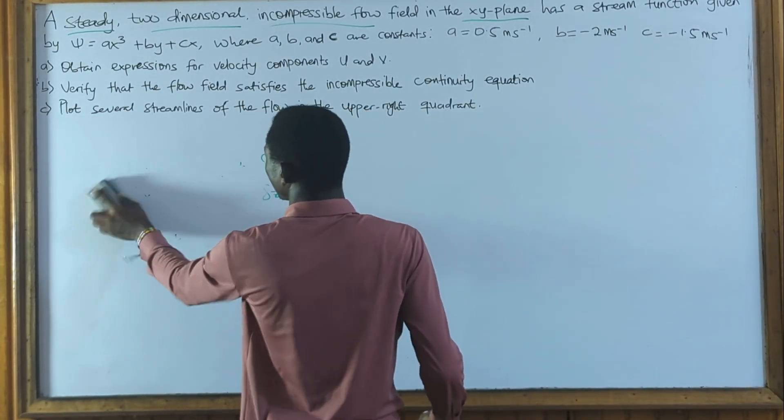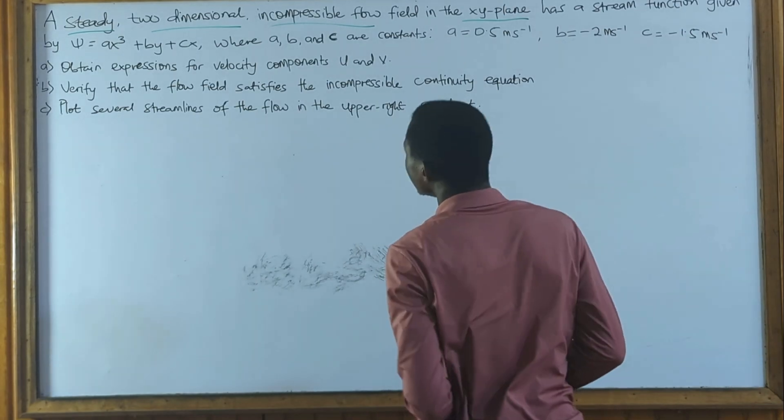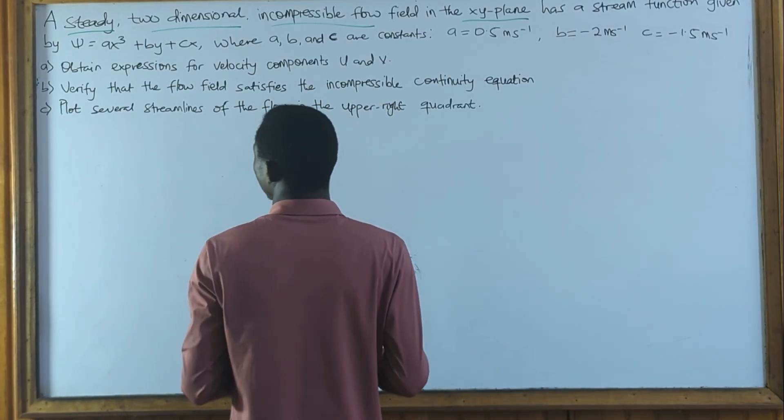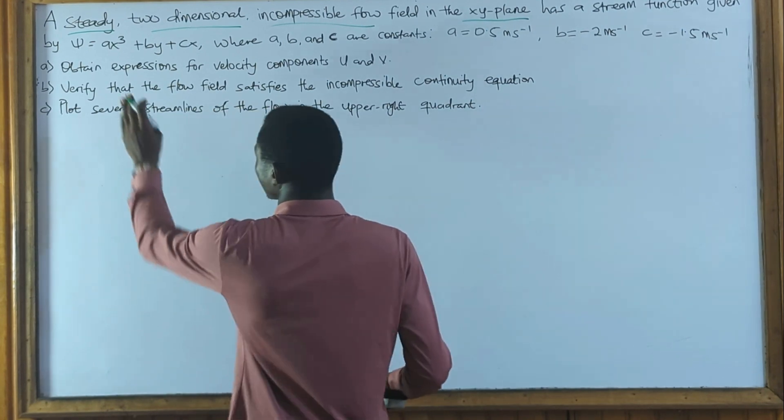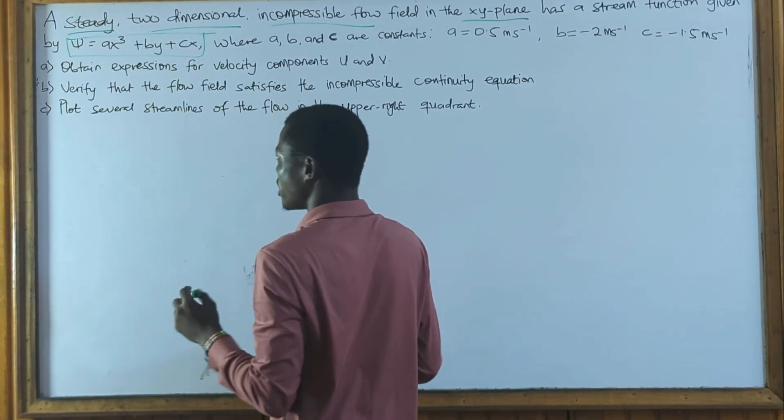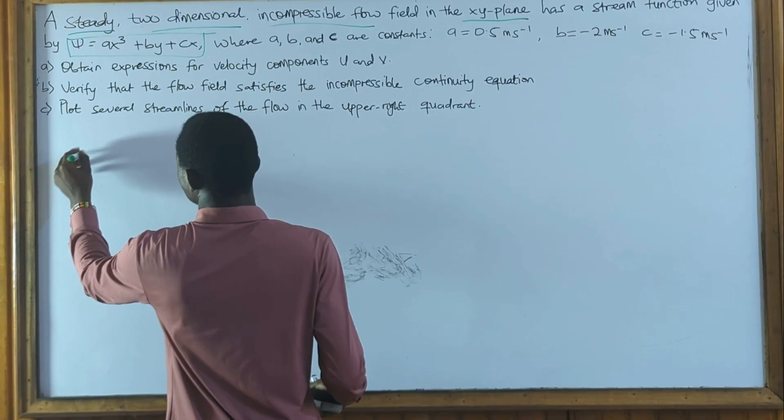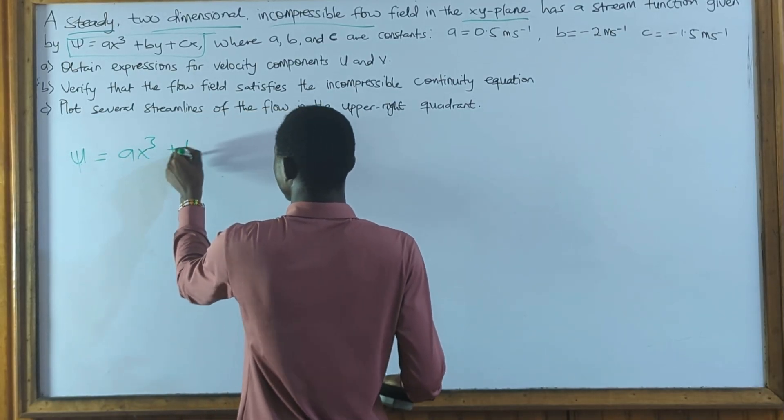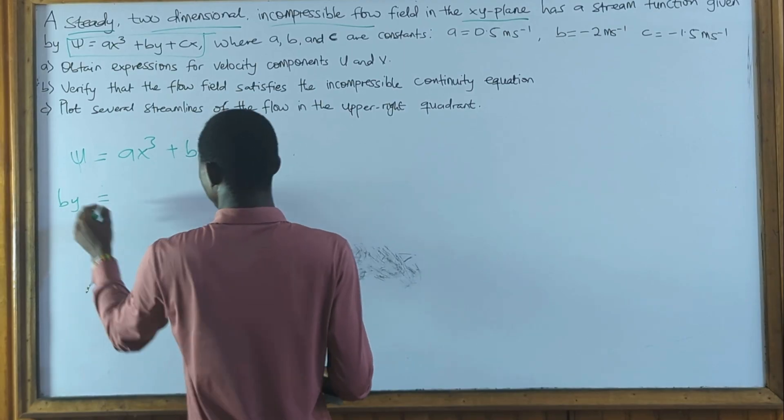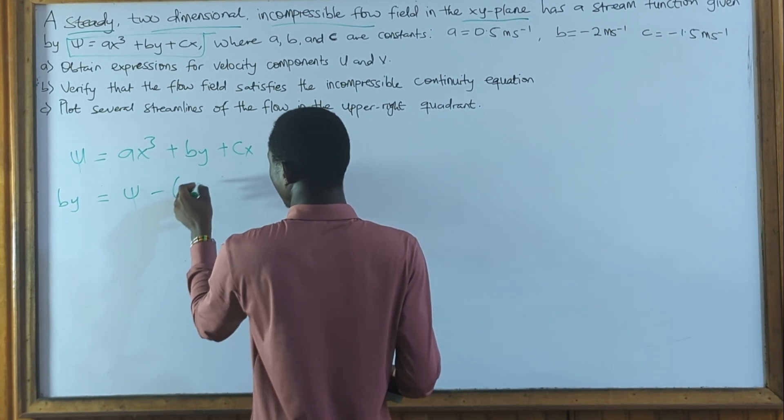So we move on to the third one, which we have to plot several streamlines of the flow in the upper quadrant. So what are our variables that we are supposed to find for? But before that, let's try to make y the subject in this expression or equation that we have here. So making y the subject, we are going to get by... okay, let me write the equation again. x³. So we have ψ = ax³ + by + cx.